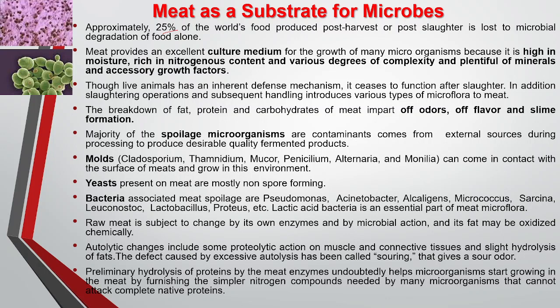After the breakdown of meat, the different components — fat, protein, and carbohydrate — will impart off odor, off flavor, and slime formation. The majority of spoilage microorganisms are contaminants that come from external sources during processing. Molds, yeast, and bacteria are the most important microbes that attack and spoil the meat.